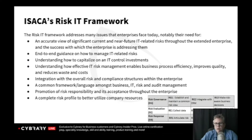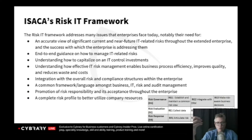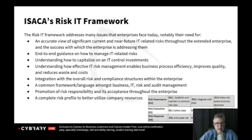For risk evaluation, we start by collecting data, we analyze risk, and then we maintain our risk profile. When we talk about analyzing risk, we're looking at determining a value for risk. Then we have to respond to risk: we articulate the risk (R2), we manage the risk, and then we're able to react to events as they come up — new risks, perhaps.